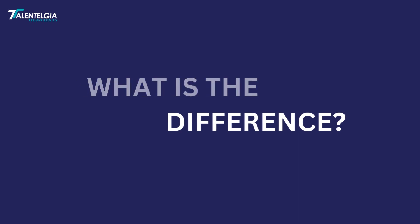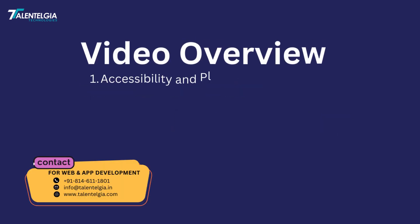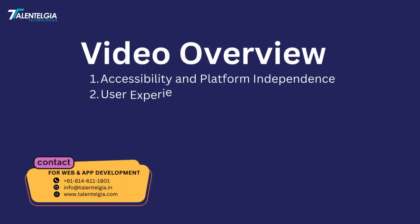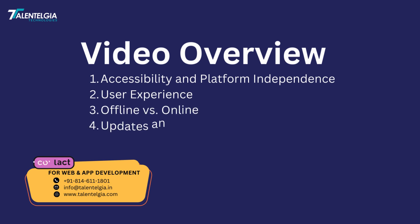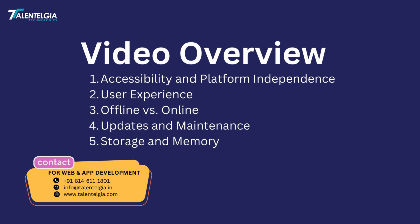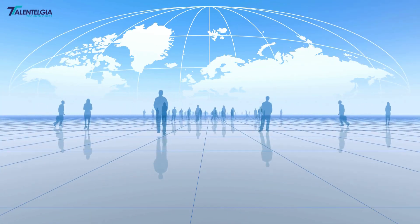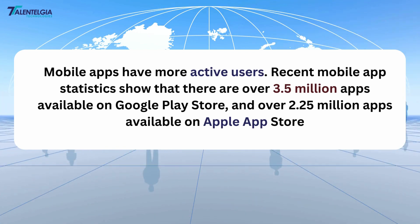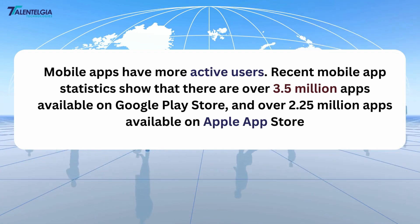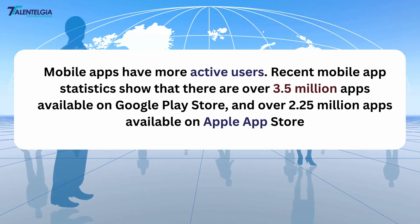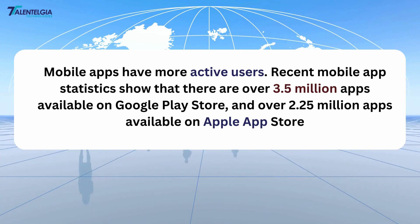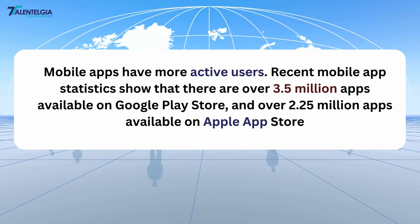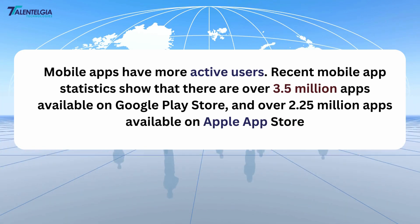In this video, we will discuss accessibility and platform independence, user experience, offline versus online, updates and maintenance, and storage and memory. By comparing mobile app statistics to web app statistics, mobile apps have more active users. Recent mobile app statistics show that there are over 3.5 million apps available on Google Play Store and over 2.25 million apps available on Apple App Store.